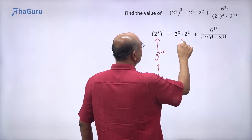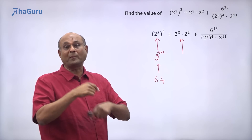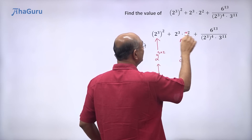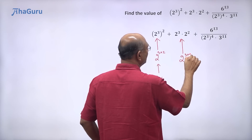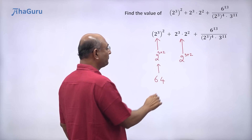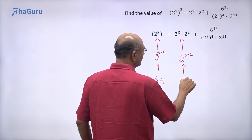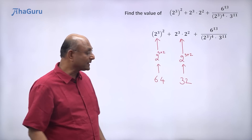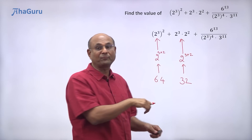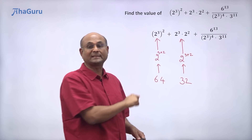Now, 2 to the power of 3 into 2 to the power of 2: this is 2 to the power of 3 plus 2, which is 2 to the power of 5, and 2 to the power of 5 is 32. It is good to remember the powers of 2 — 2 to the power of 4 is 16, 2 to the power of 5 is 32, and 2 to the power of 6 is 64.